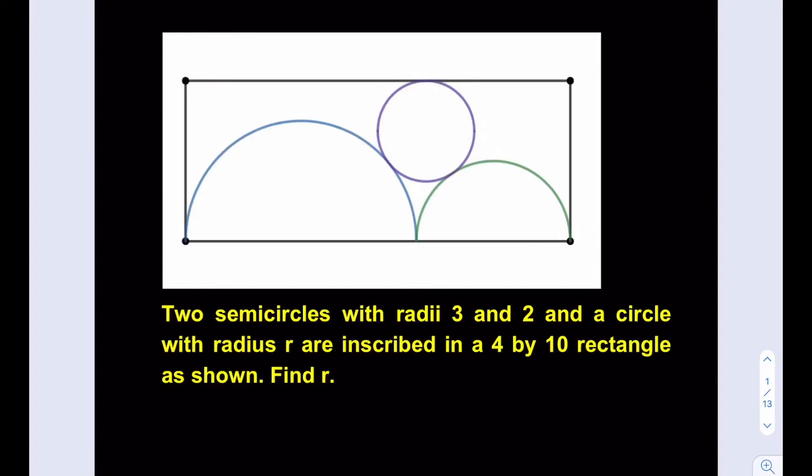Hello everyone, in this video we're going to be solving another geometry puzzle. Two semicircles with radii 3 and 2 and a circle with radius r are inscribed in a 4 by 10 rectangle as shown. Find r. So we're going to be finding the radius of the circle. At this point you can go out and try the problem yourself first before you watch the solution. Let's get started.